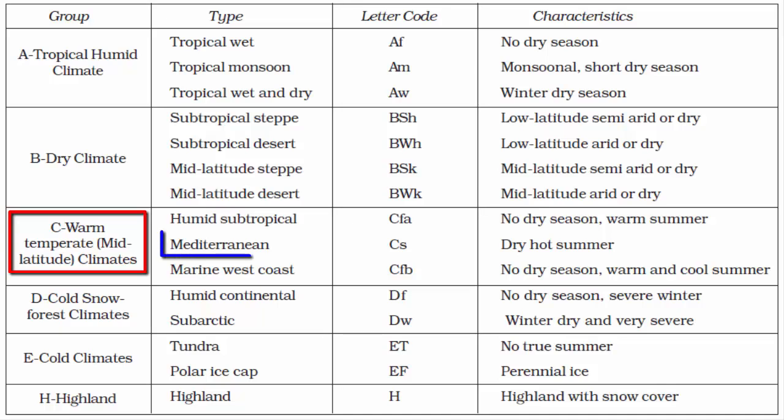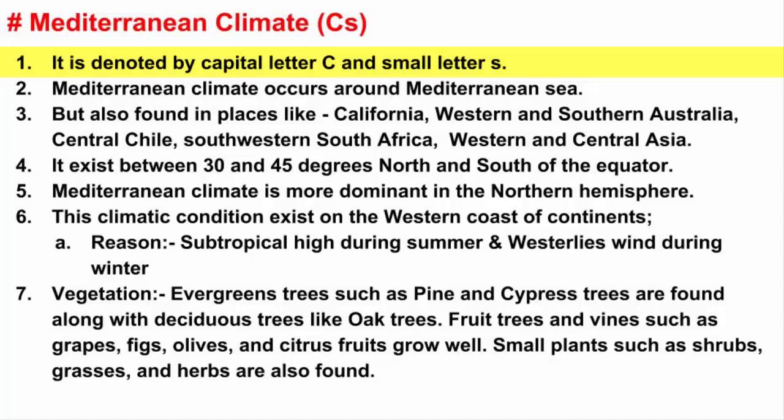In this video, we will learn about Mediterranean climate. It is denoted by capital letter C and small letter S. The capital letter C denotes the entire group which is warm-temperate mid-latitude climate, and small letter S denotes summer dry season.